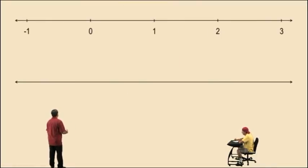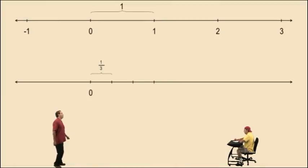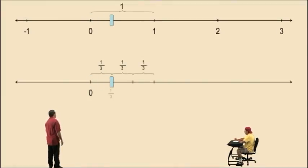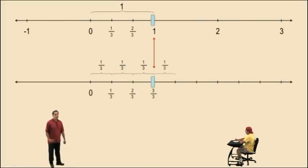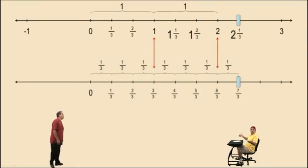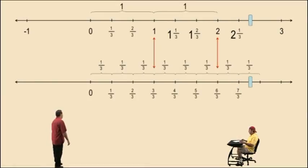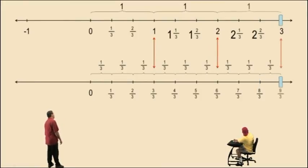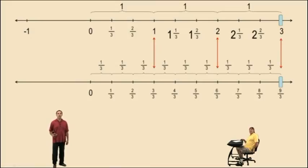Now let's take 1 whole and divide it into 3 equal parts. That's equivalent to 1 divided by 3, or the fraction 1 third. And notice, it takes 3 of these thirds to make up 1 whole number. Now let's add another third — that gives us 4 thirds, equivalent to 1 and 1 third. If we add another third, that's 5 thirds, equivalent to 1 and 2 thirds. If we add another third, that's 6 thirds, equivalent to 2. If we add another third, what do we get, Charlie? 7 thirds — very nice, that's equivalent to 2 and 1 third. What do we get if we add another one, Charlie? 8 thirds — very nice, and that's equivalent to 2 and 2 thirds. Charlie, bring us home. 9 thirds — and that makes sense because 9 divided by 3 is equivalent to 3.